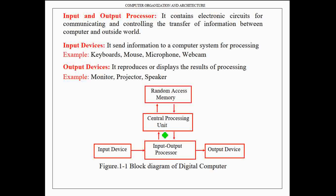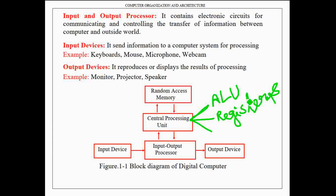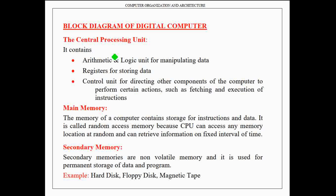A very important component of the digital computer is the central processing unit, that is the CPU. The CPU consists of three important components: the arithmetic and logic unit (ALU), registers, and control unit. The ALU is used for manipulating data, registers are used for storing data, and the control unit is used for directing other components of the computer to perform certain actions such as fetching and execution of instructions.